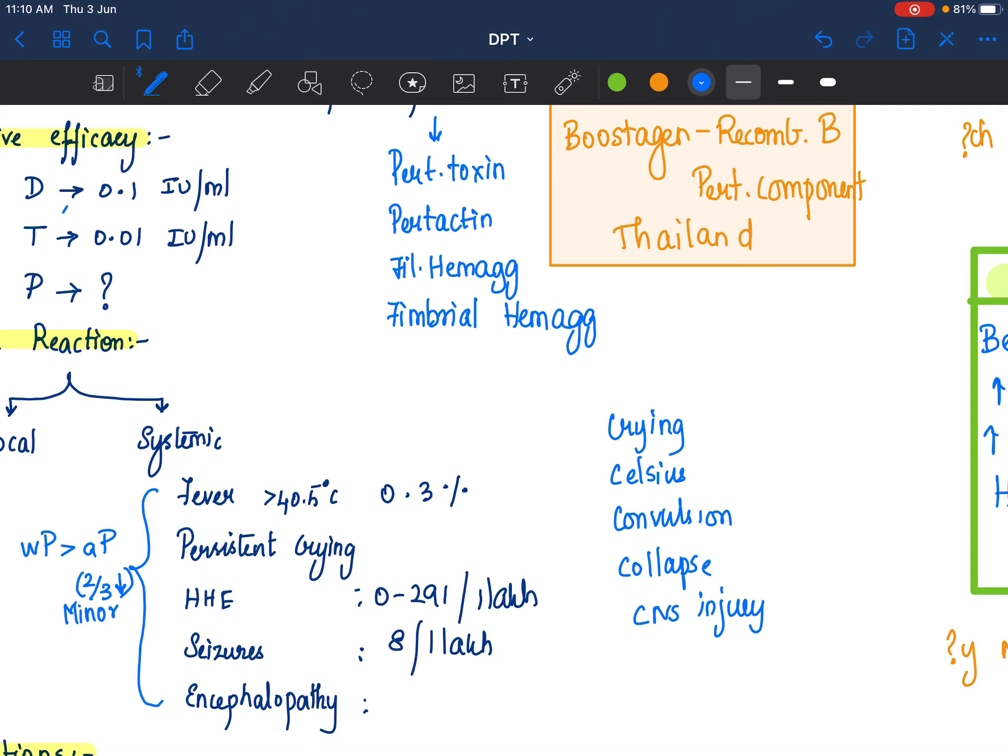This from most common to least common, we are doing. So crying is the most common, CNS injury is the least common. Understood.